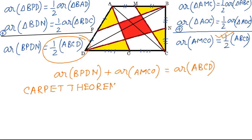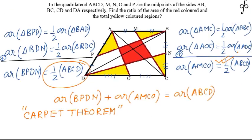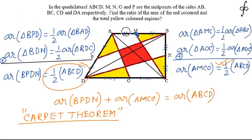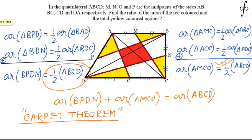Let's discuss the Carpet Theorem — the idea is logically very relevant and important. The Carpet Theorem says that if we consider these two strips AMCO and BPDN as non-overlapping carpets, then these two non-overlapping carpets on adding should give the total area of the quadrilateral ABCD. If they do overlap, the overlapping area equals the leftover area.